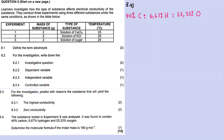Because we assume 100 grams, we can directly convert the percentages to grams: 40 grams of carbon, 6.67 grams of hydrogen, and 53.33 grams of oxygen. If the question had said 200 grams or 50 grams, you would scale accordingly, but since we assume 100 grams, the percentages become grams directly.